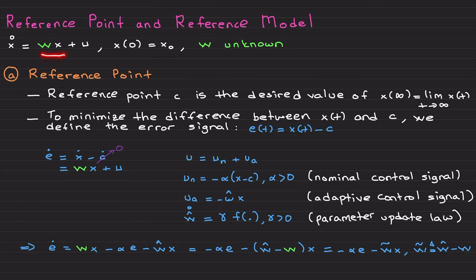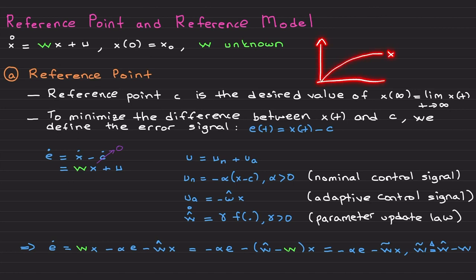As you remember from previous videos, w is unknown and I am going to use adaptive control, so there are no assumptions on w. First, I would like to do a reference point based design. The reference point c is the desired value of x as t approaches infinity — this is the point that we want x to converge to. We want state x to converge to command c or reference c. I am going to assume c is constant, though it can of course be time-varying. We are introducing basic concepts first, so I don't want to add additional complexity.